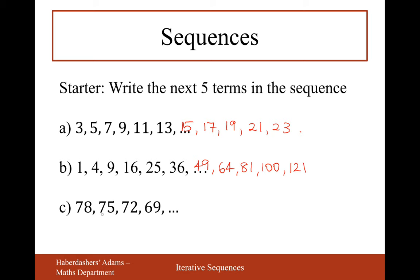Part C is subtract 3 each time. So it'd be 66, 63, 60, then 57, and then 54. Those are the next five numbers in this sequence.